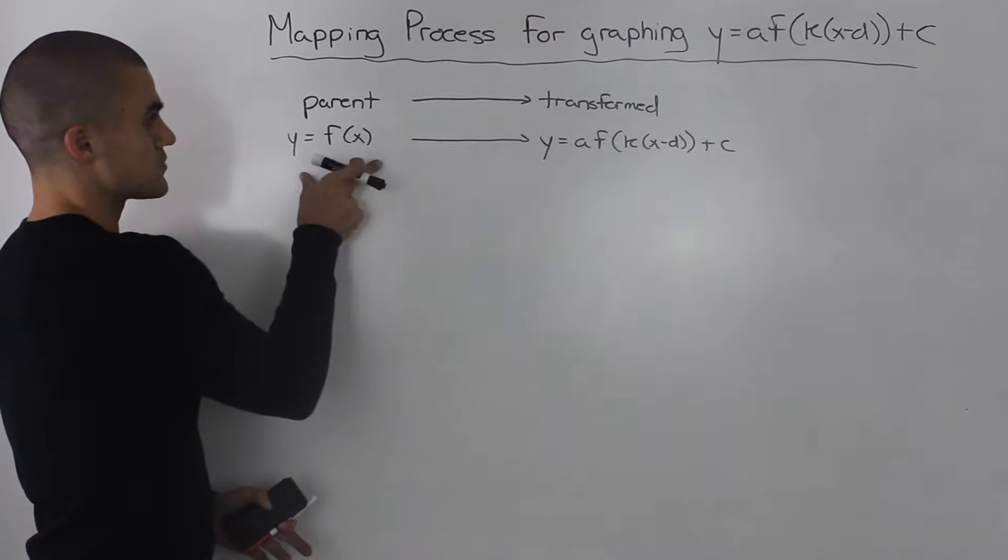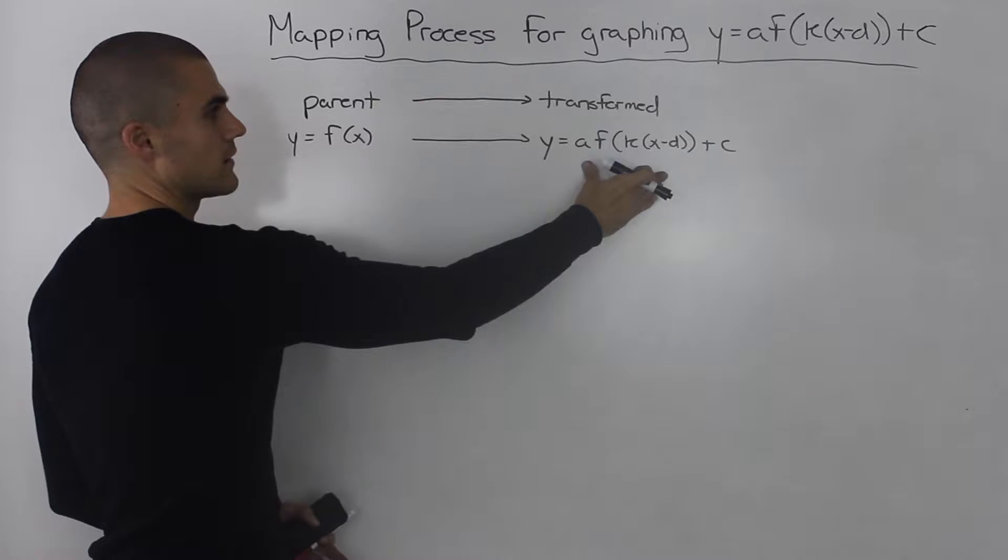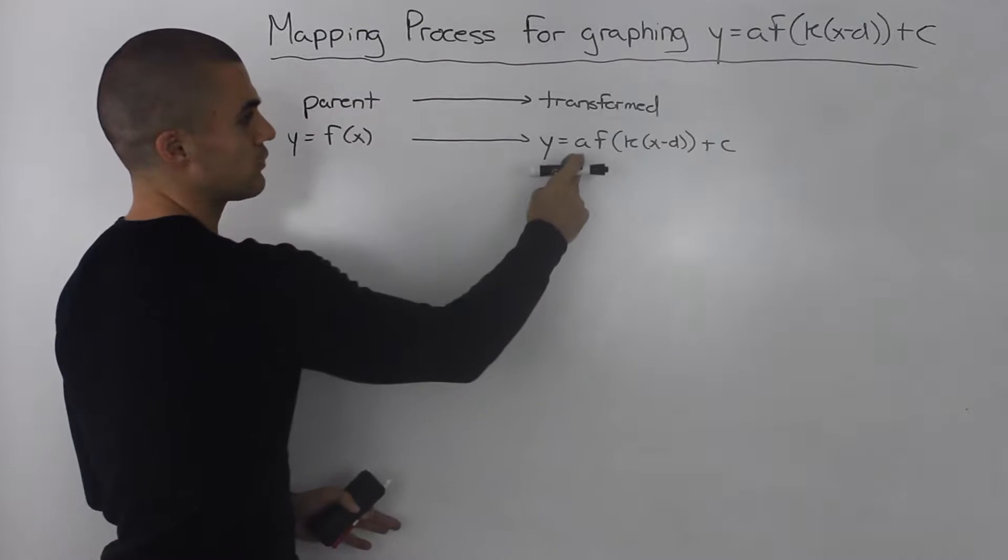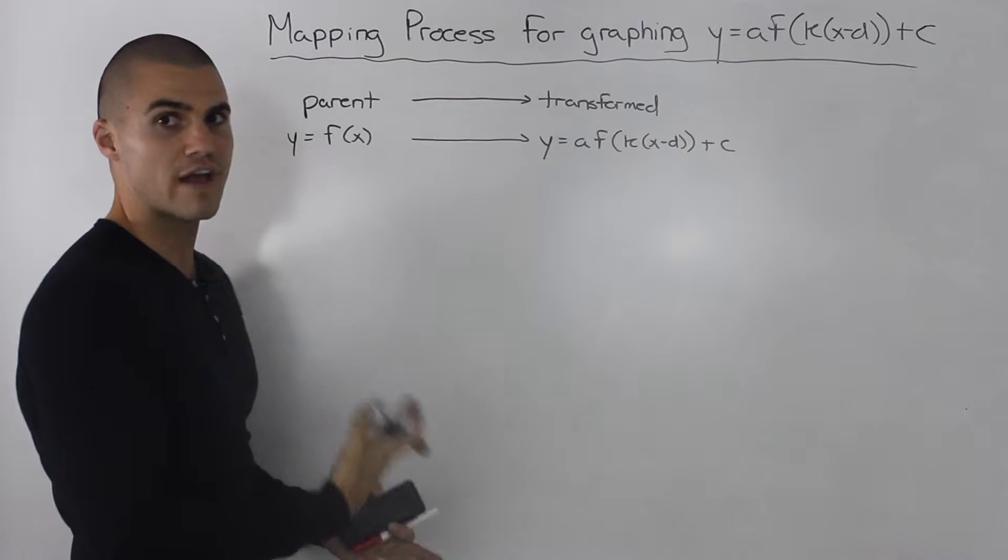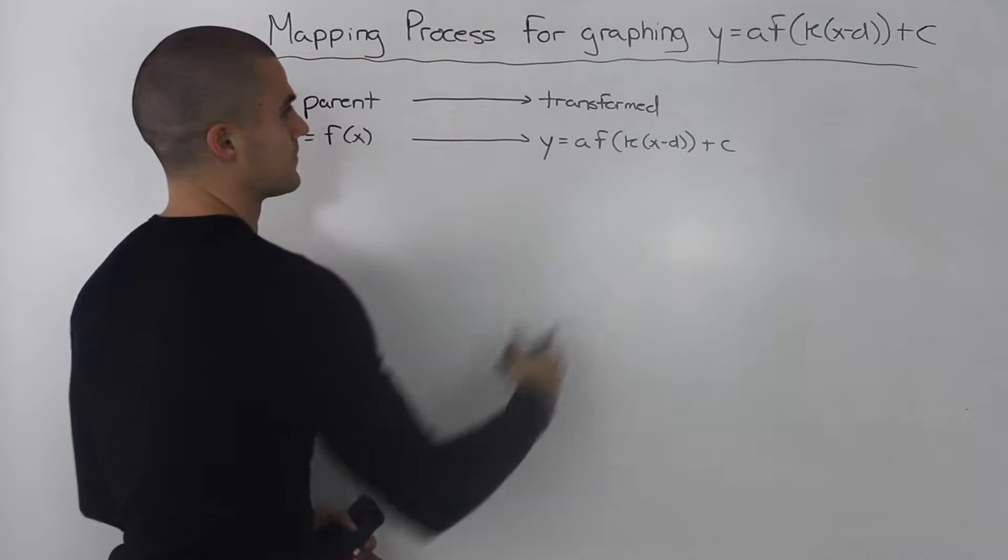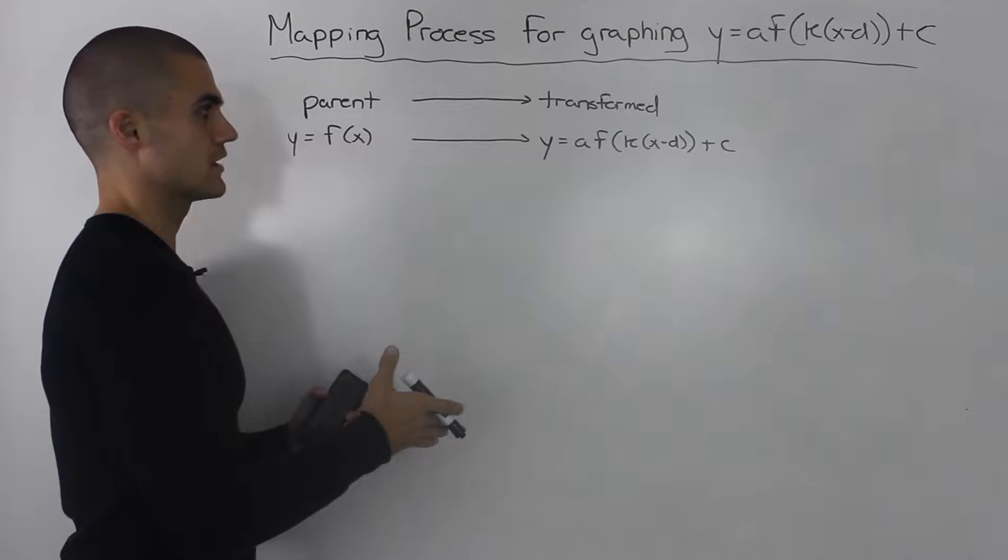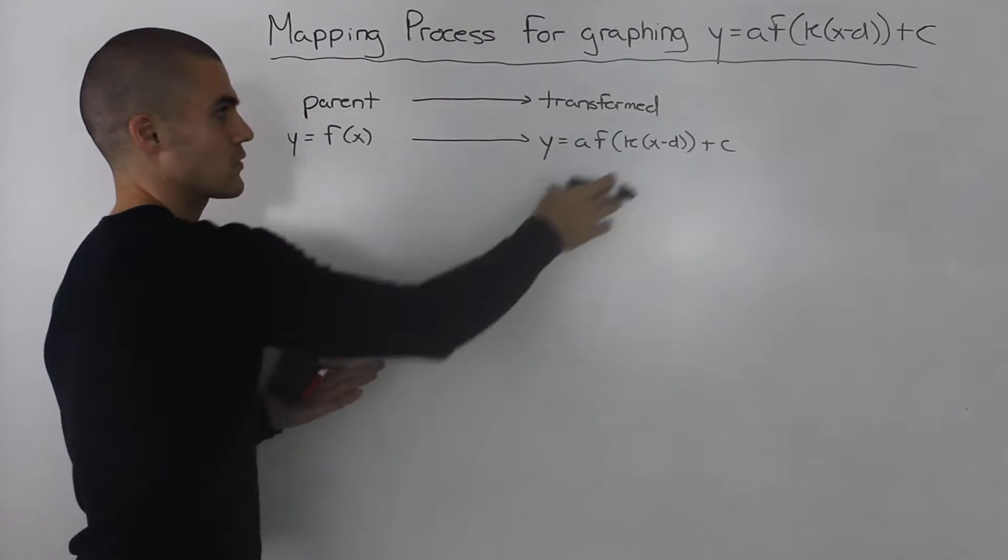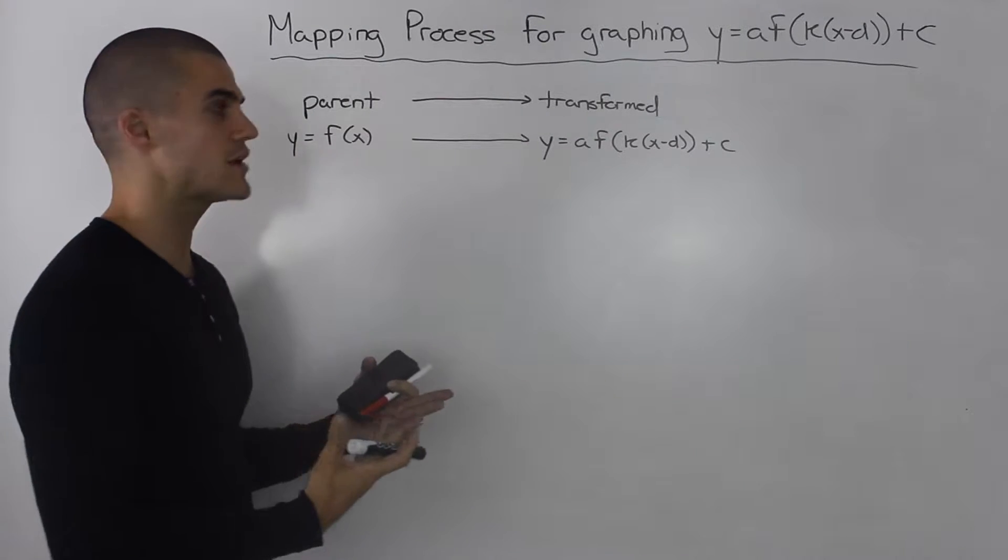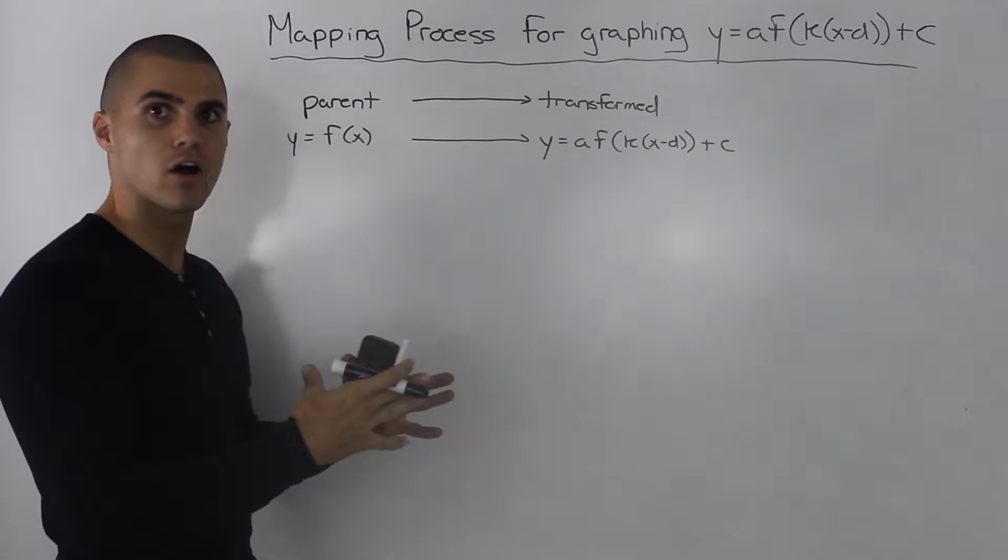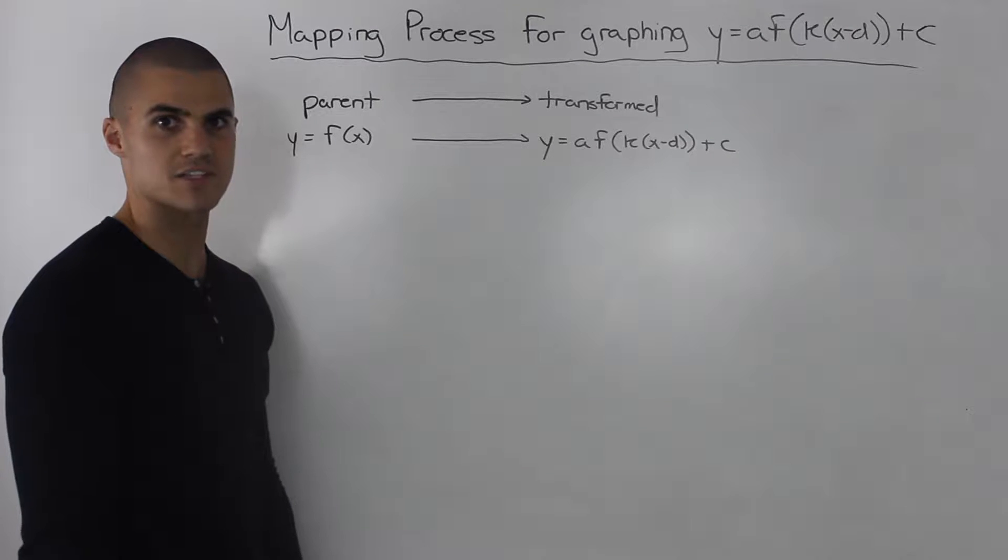So far, what we know is we take a parent function and then transform it. In the last few videos, we went through each of these letters and figured out how they affect the graph—this a, k, d, and c. However, we've gone through each of them individually, and it's easier to graph a transform function when you're only transforming it with one transformation. How do we go about combining all of the transformations and making that graphing process as smooth as possible?